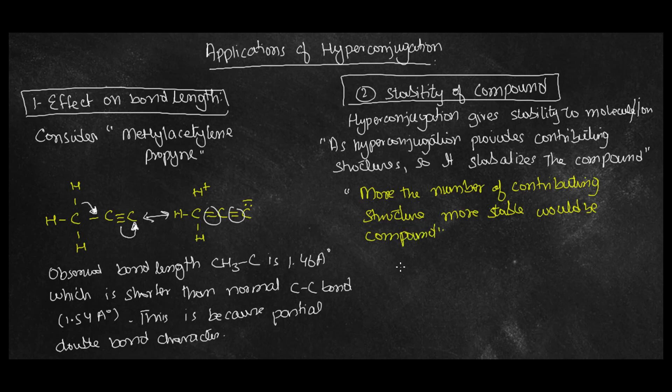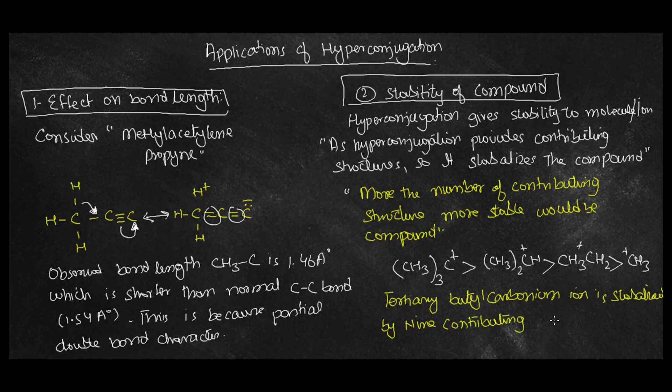more the number of contributing structures, more stable would be the compound. Here is the reactivity or stability of component order. The tert-butyl carbonium ion is stabilized by nine different ways. The third one is activating effect